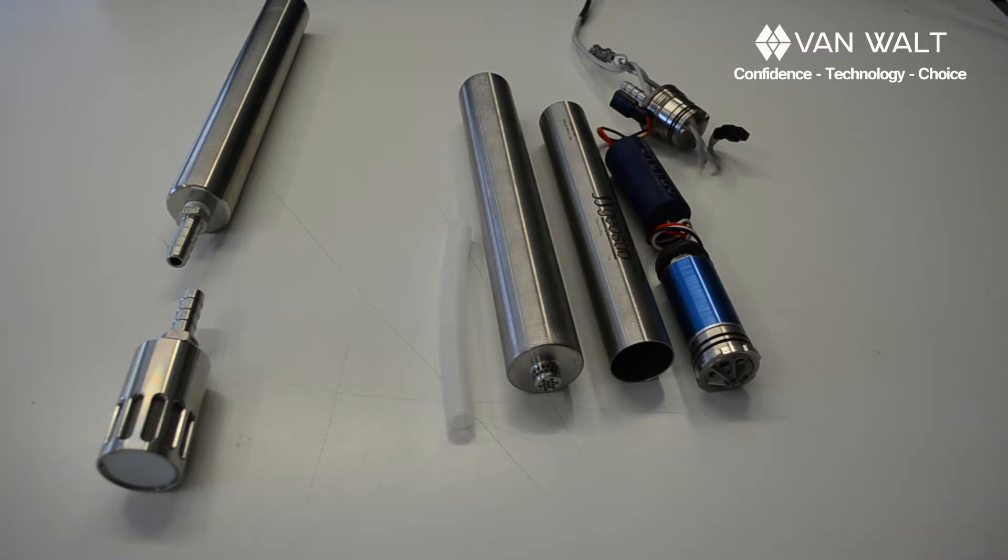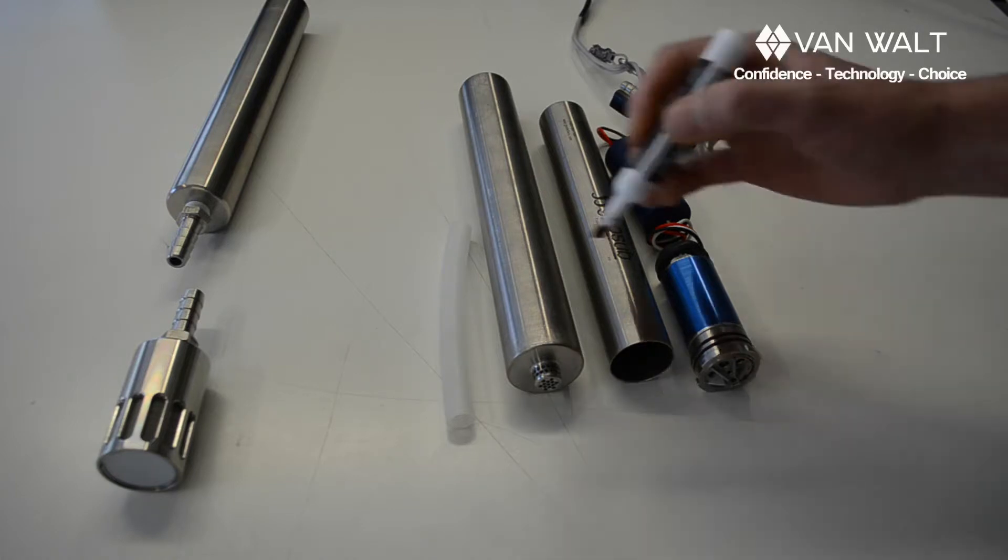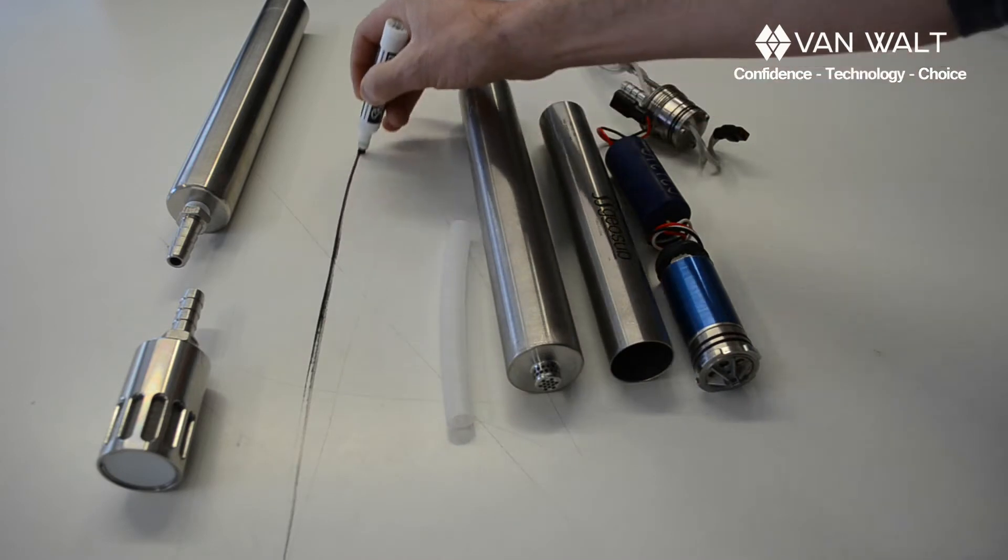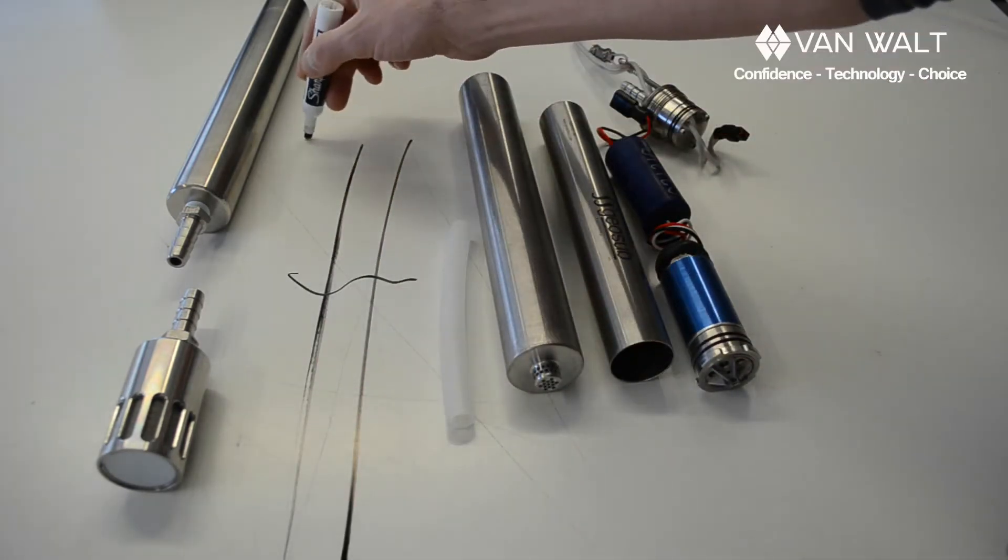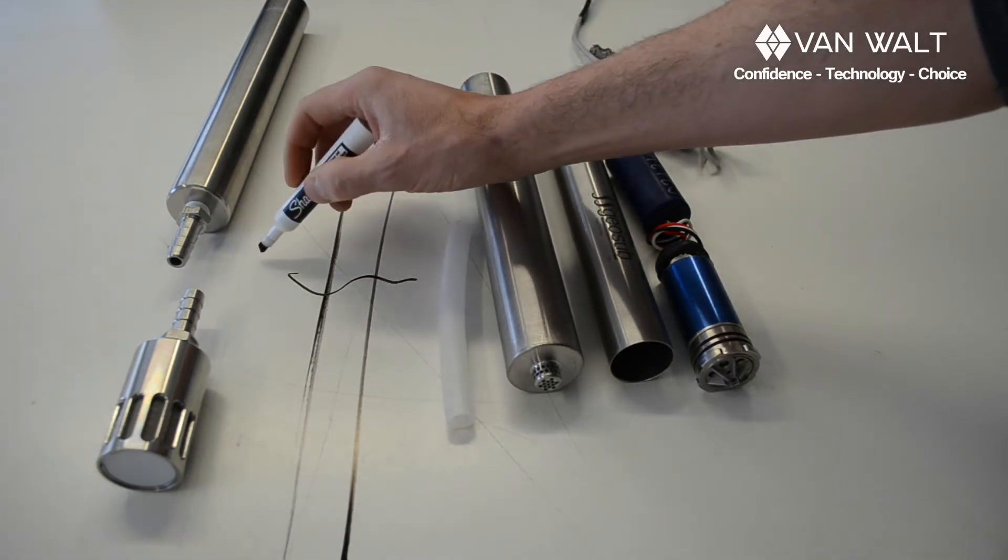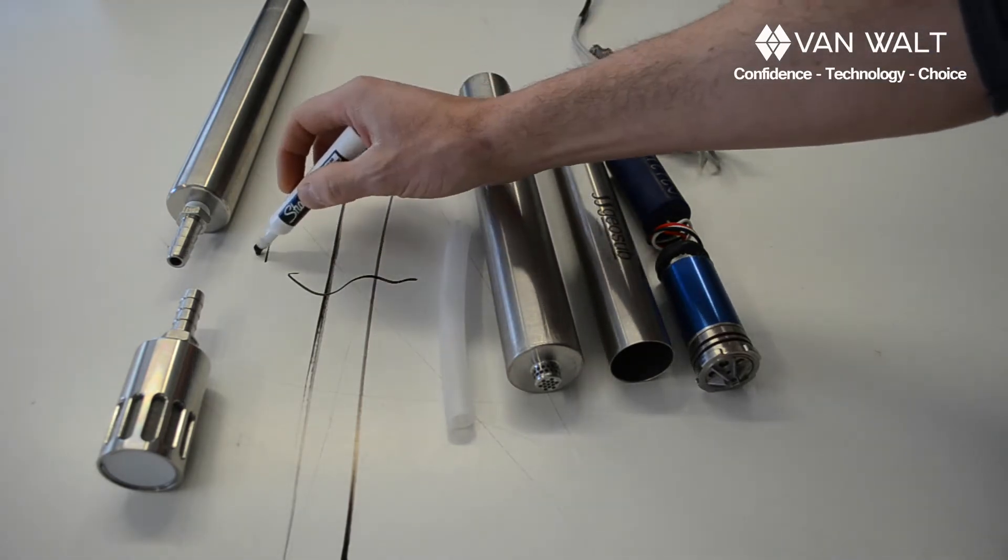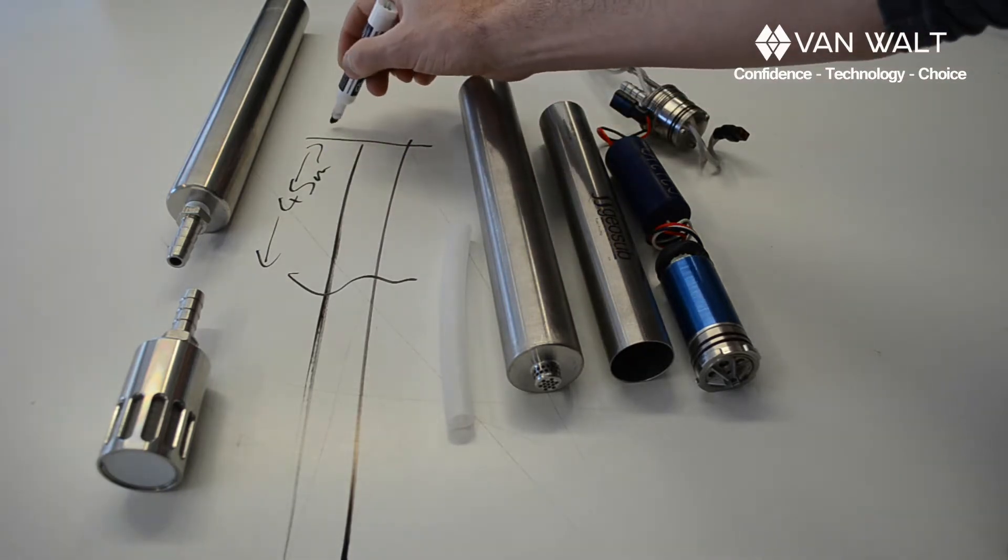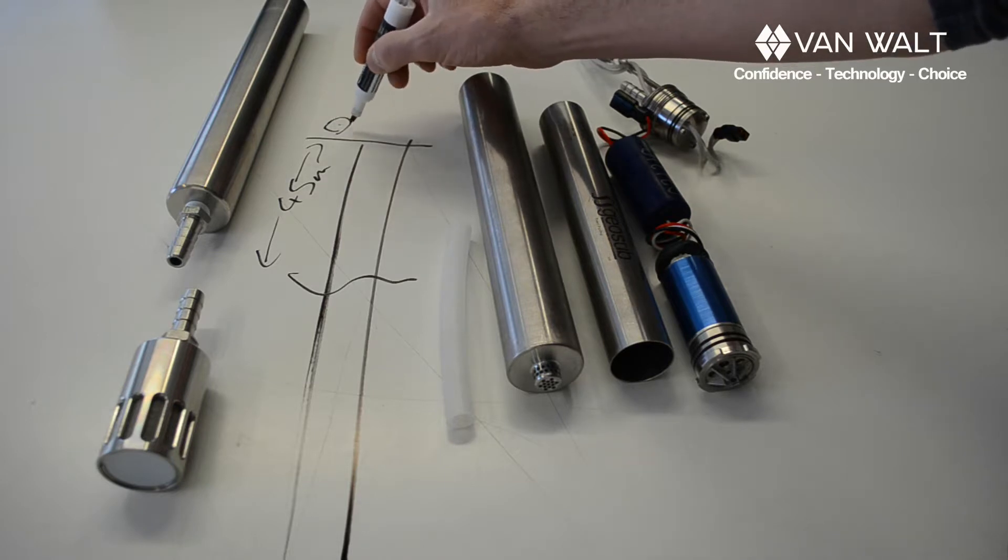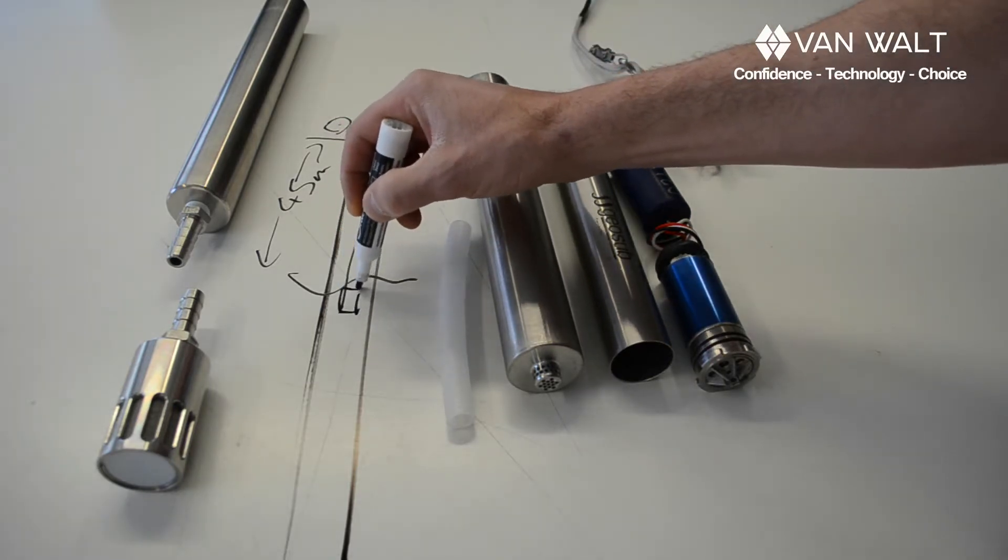So that's the basic performance of the pump. So what we have is if I just draw myself a little well here with some water and this is the surface. And so this is our limitation here, 45 meters from the surface where your pump controller is down to where the pump itself is.